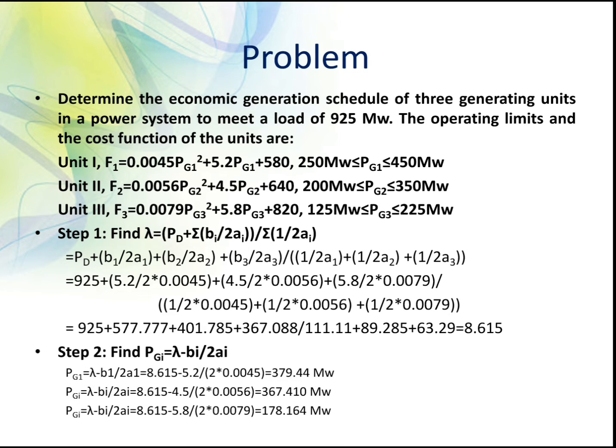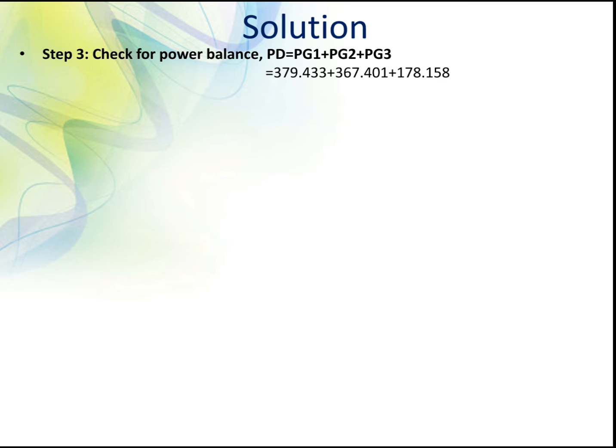Next, determine the generation: P_gi = (lambda - b_i) / (2*a_i). So Pg1 = (8.615 - b1) / (2*a1), where b1 = 5.2 and a1 is the coefficient of Pg1 squared. Similarly, Pg2 = (lambda - b2)/(2*a2) and Pg3 = (lambda - b3)/(2*a3). After finding the generations, check the power balance equation: Pg1 + Pg2 + Pg3 should equal 925 megawatt. Substituting the values confirms the demand equals the sum of the generations, so the power balance equation is satisfied.